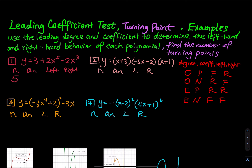What is the leading coefficient? The leading coefficient is the number in front of x to the fifth, which is equal to 2. Now is the leading degree odd or even? 5 is odd. And then the leading coefficient is positive.